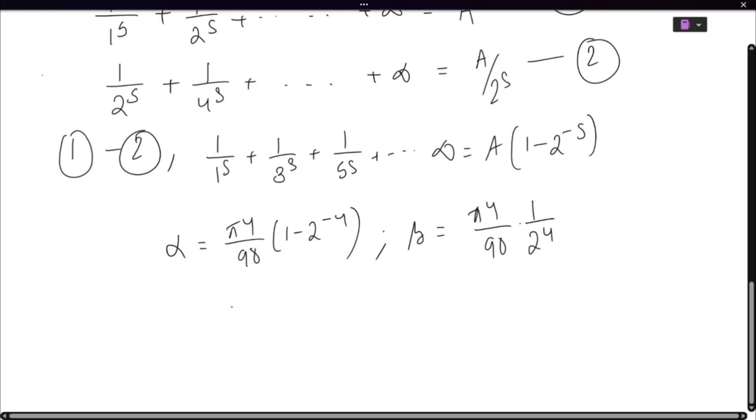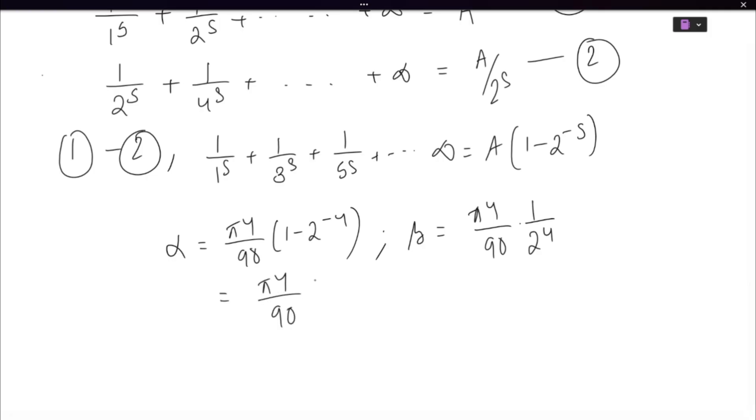So this was our entire scheme. So alpha becomes pi to the power 4 by 90 and 1 minus 1 by 2 to the power 4 is nothing but 2 to the power 4 minus 1 by 2 to the power 4.